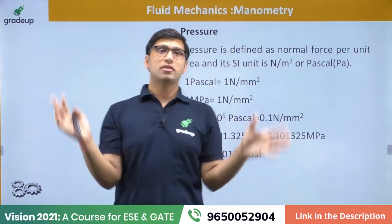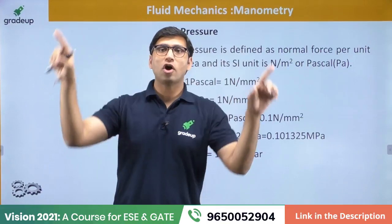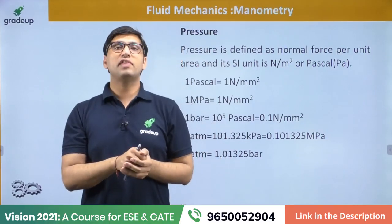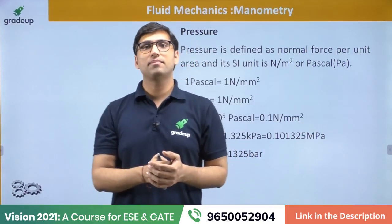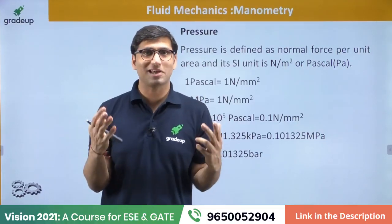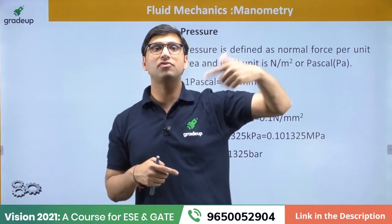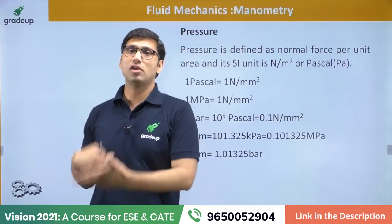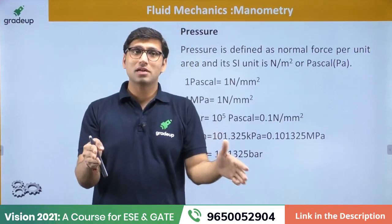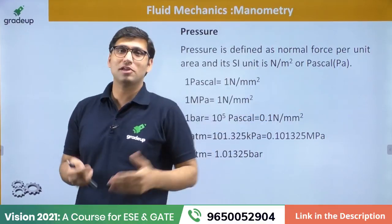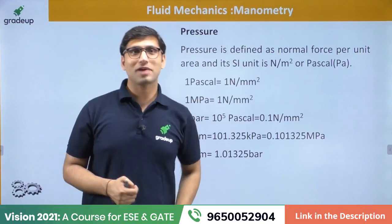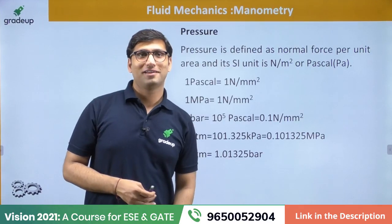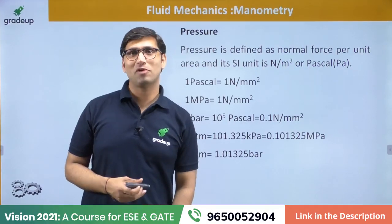This whole concept of manometer revolves around pressure. What is pressure? According to Anurag Shivastri, pressure is equal to normal force per unit area. Pressure is basically the normal force which acts on a surface. The force which acts normally, that force per unit cross-sectional area, is called pressure.